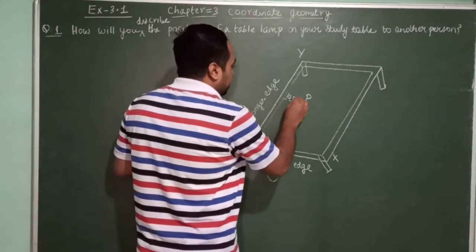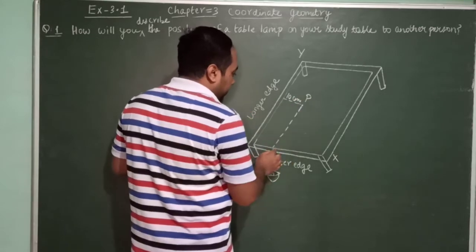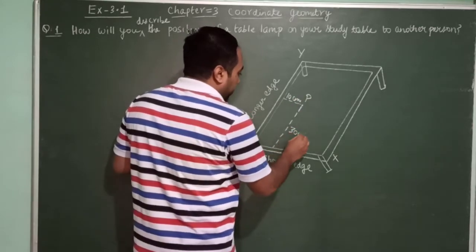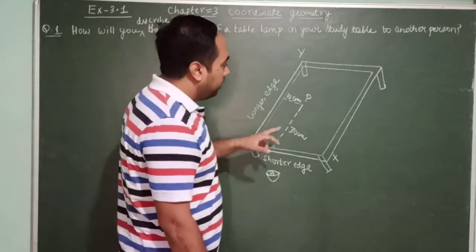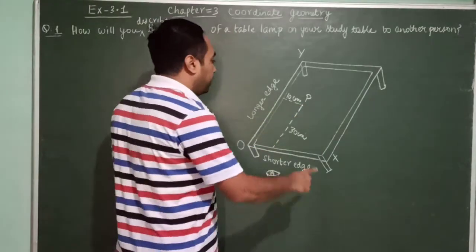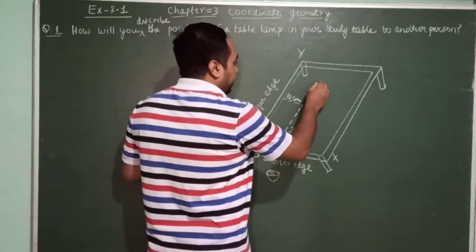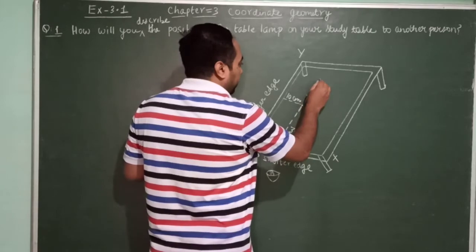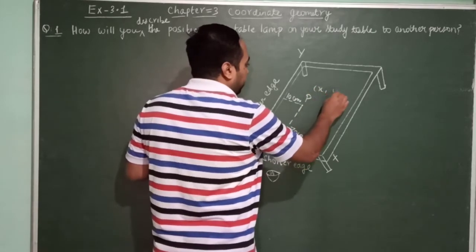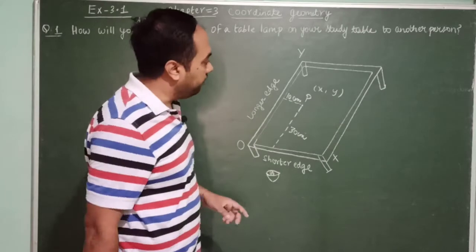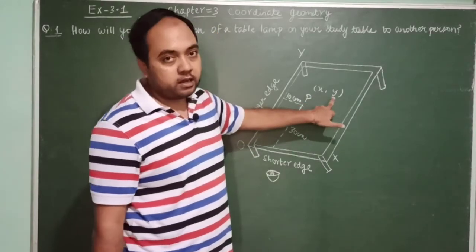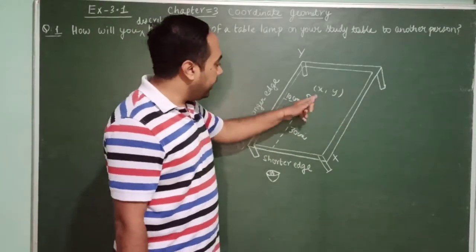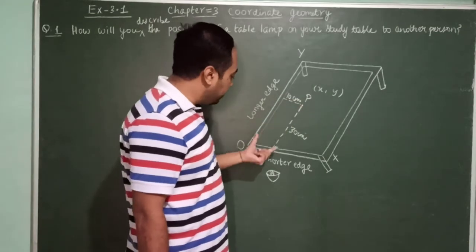Suppose this is 10 centimeters and this one is 30 centimeters. You know very well that the position of any point is represented in the form of an ordered pair, where the x-coordinate is written first and is followed by the y-coordinate. The x-coordinate is 10 centimeters.